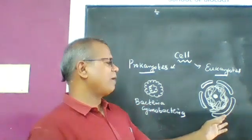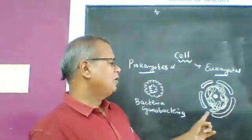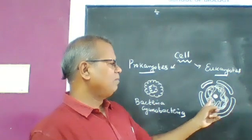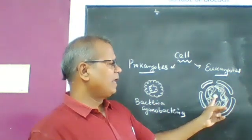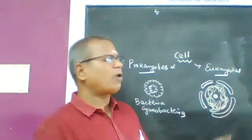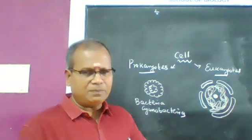In eukaryotic cells, the nucleus contains a nuclear membrane, nuclear pores, nucleoplasm, nucleolus, and chromatin reticulum.